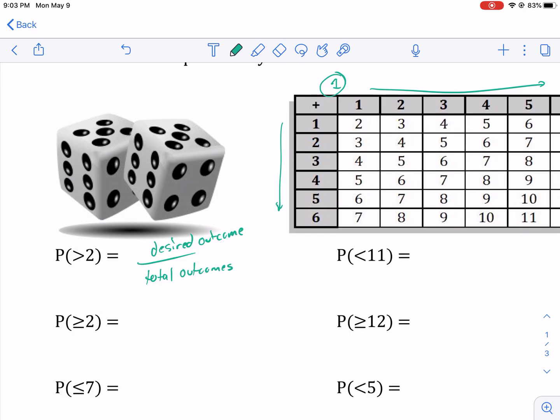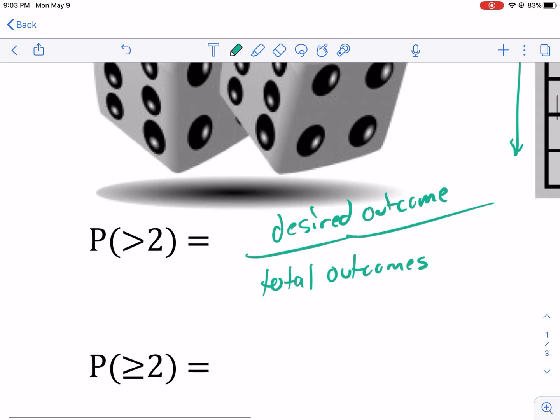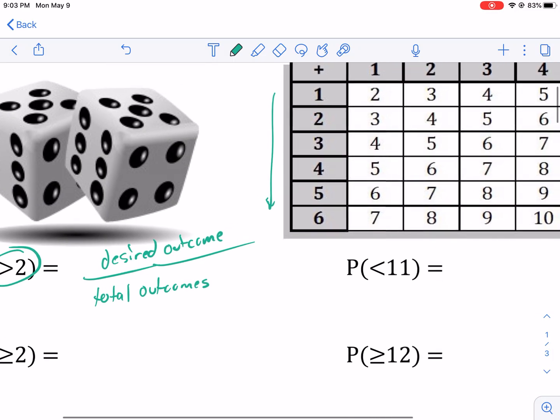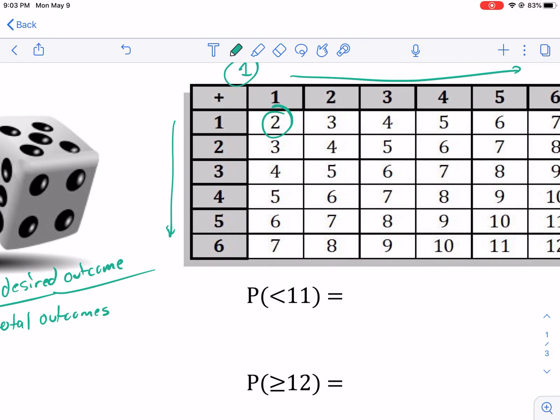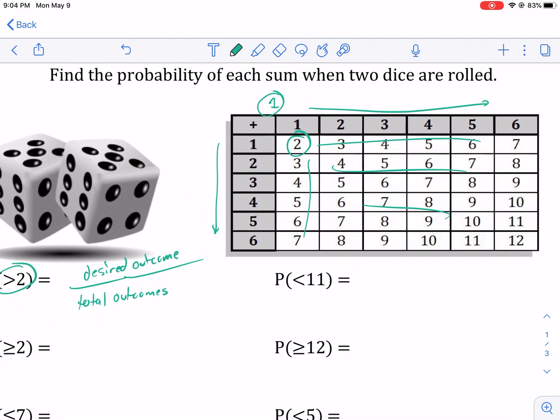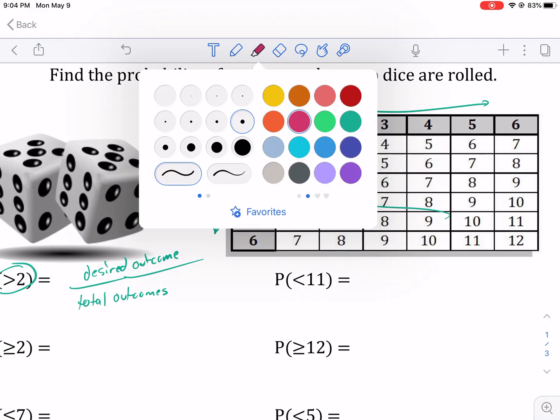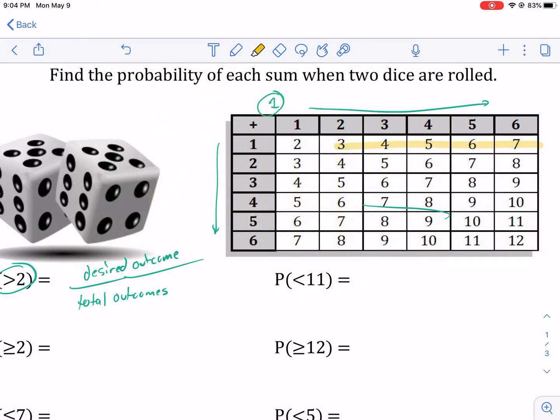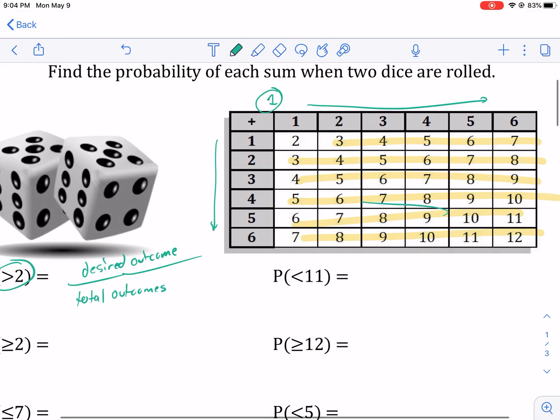So in this case, the desired outcome is in parentheses, something bigger than two. Well, bigger than two is everything this way, this way, this way. Basically the whole chart. So how many values, how many desired outcomes are there total? Well, we can count them. So the total number of outcomes, one, two, three, four, five, one, two, three, four, five, six. We can count all of these. The total number of desired outcomes is 35.